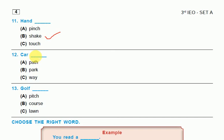Car: park. The word is car park. Golf: pitch, course, or lawn. The word is golf course.